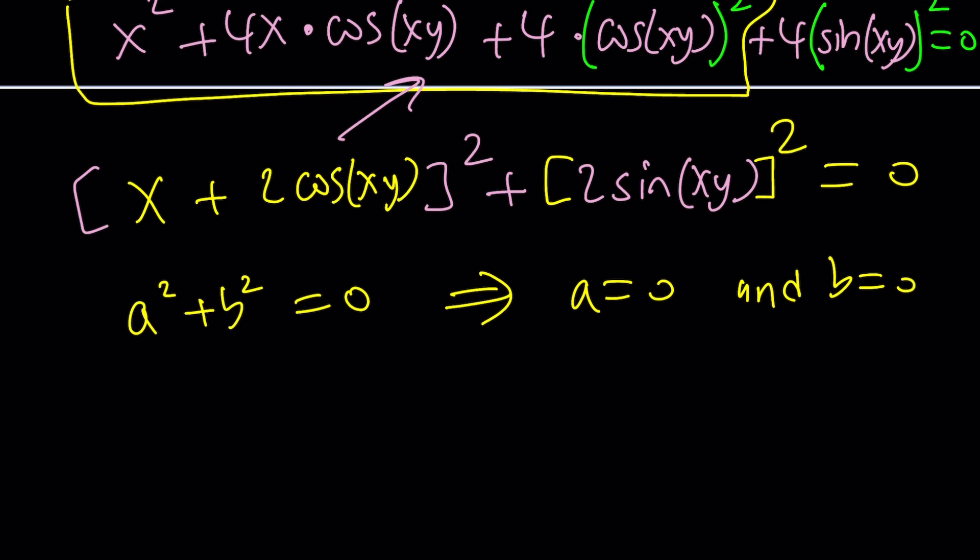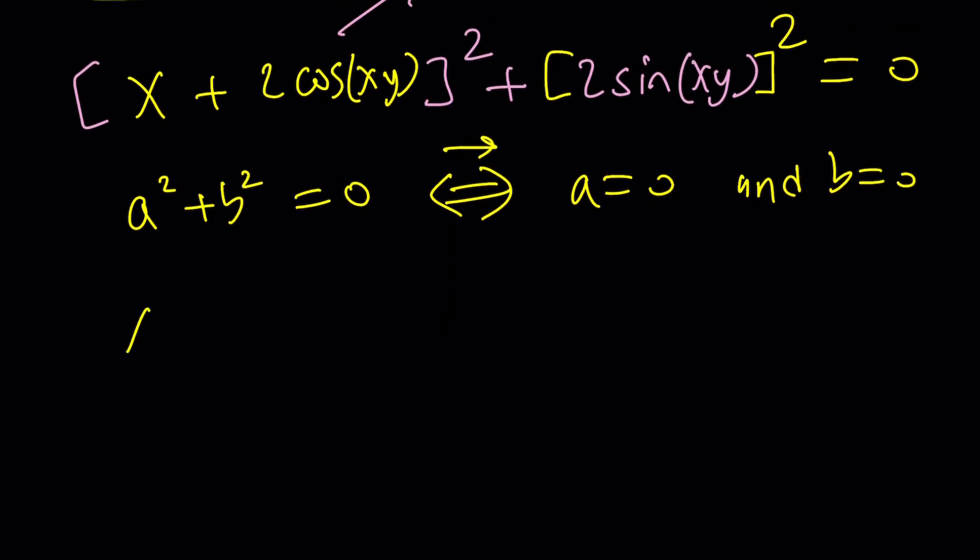Can we say the opposite is true? Of course. Both sides, right? But it's more important to focus on this side because that's what we have. So from here, we get the following. x plus 2 cosine of xy is equal to zero and 2 sine of xy is equal to zero. Beautiful.